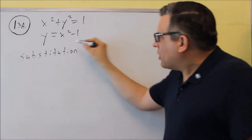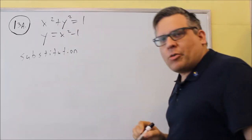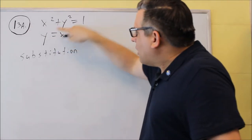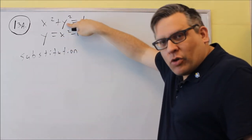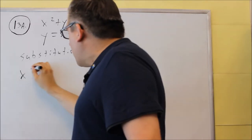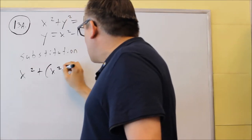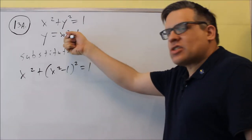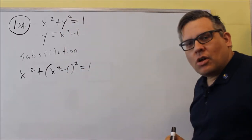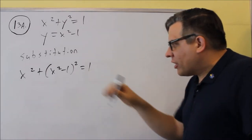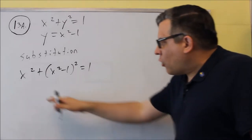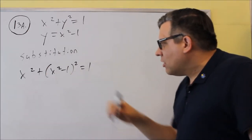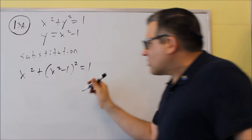For substitution, we're going to start here because they already have one of the variables solved for us. It already says y equals x squared minus 1, so we can just take that and put it into the top equation. So I'm going to do x squared plus (x squared minus 1) squared equals 1. Since y was already isolated, we simply substitute that into the first equation. Now we've eliminated one of the variables and only have x's left, so we can continue to solve.